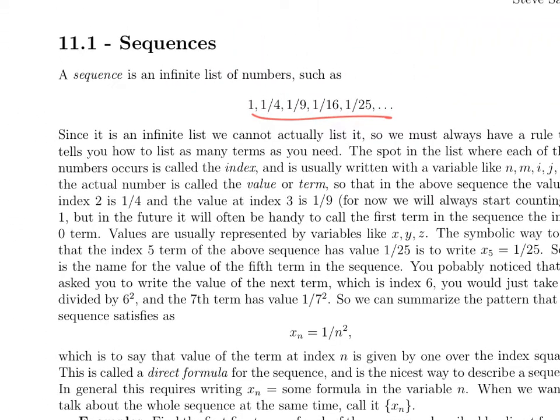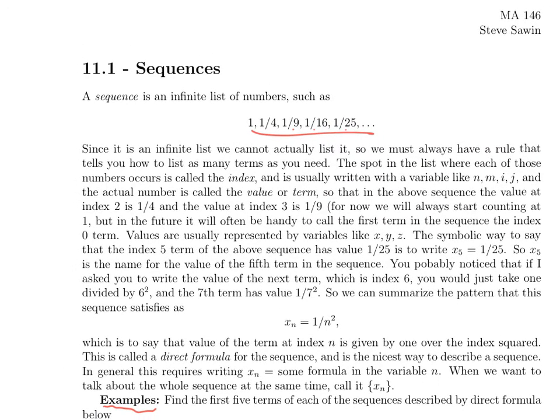This lecture is going to cover the first half of section 11.1, which is sequences, totally new topic. It won't for a while relate to anything we've done before. A sequence in mathematics is an infinite list of numbers. Here's one: 1, 1/4, 1/9, 1/16, 1/25, and so on. It's an infinite list, so we can't actually write it out. We'll have dot, dot, dot written on there. You should be able to figure out the pattern and guess what the further numbers are.